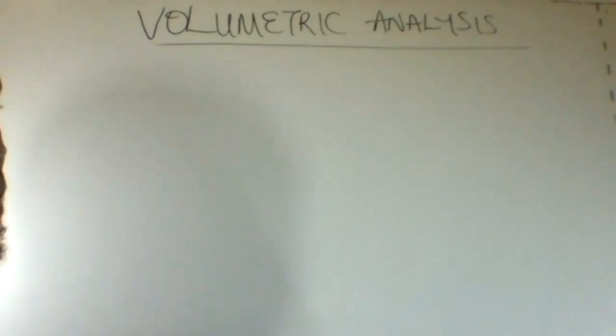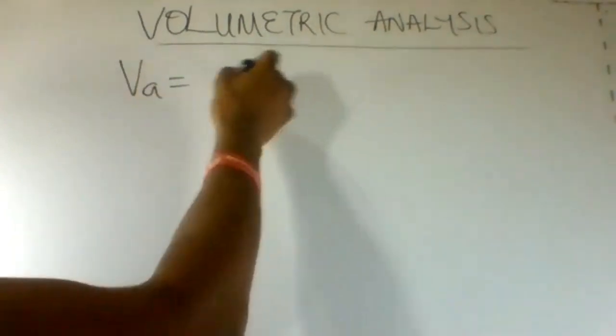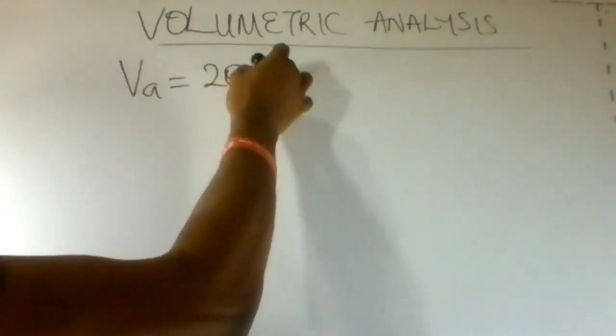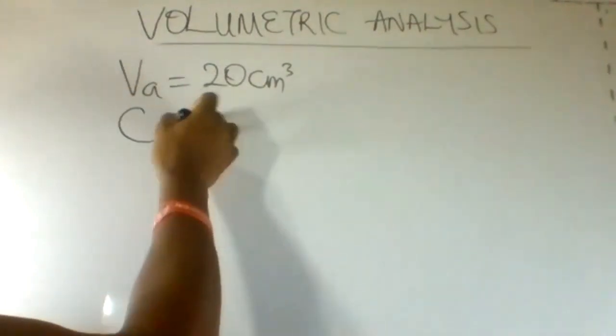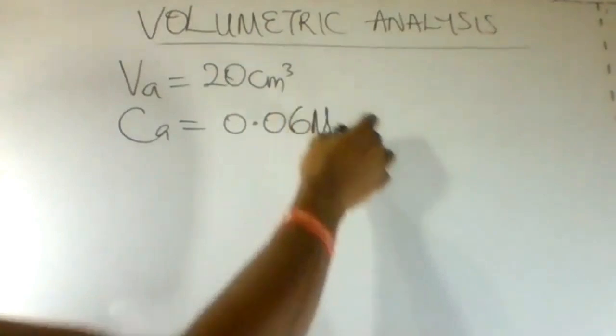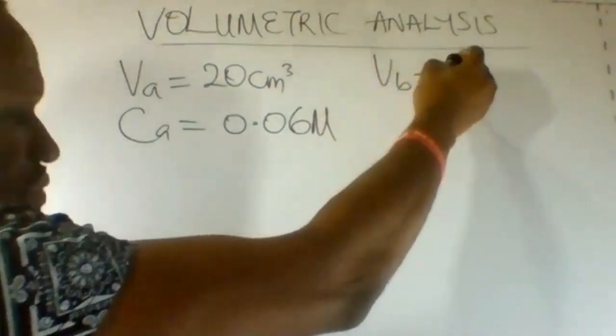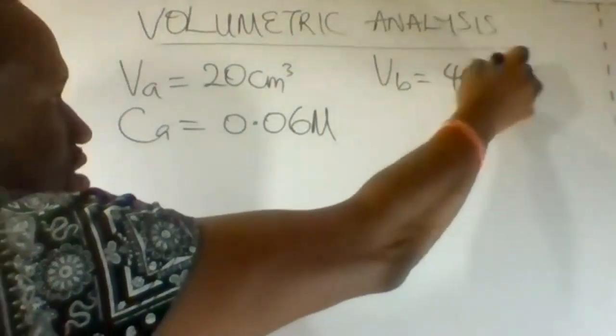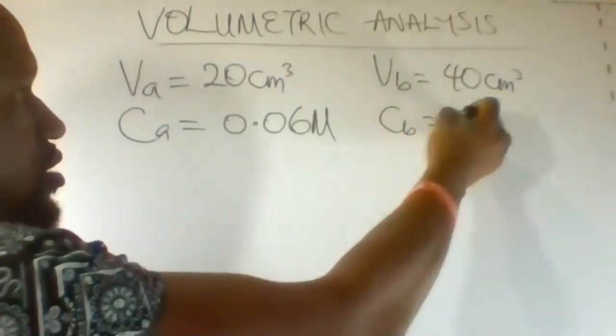The values given in the question are volume of acid, that is 20 cm³, concentration of acid, 0.06 moles per dm³, volume of the base given, 40 cm³. We are not given the concentration of the base.